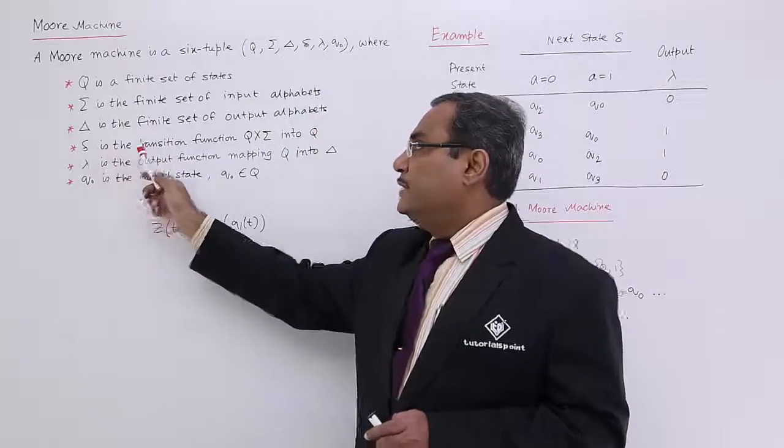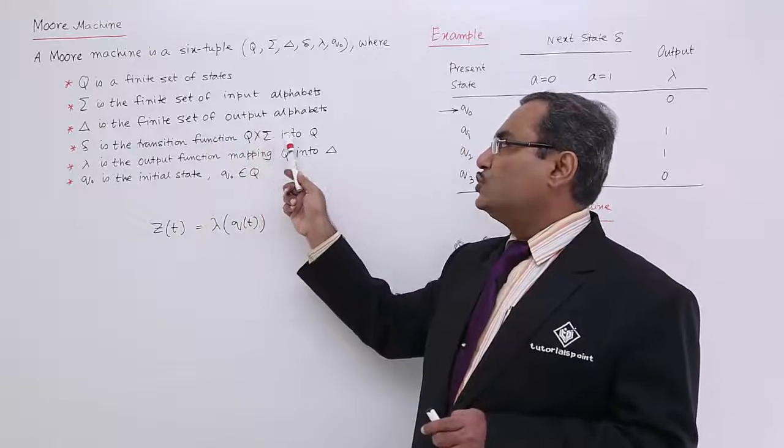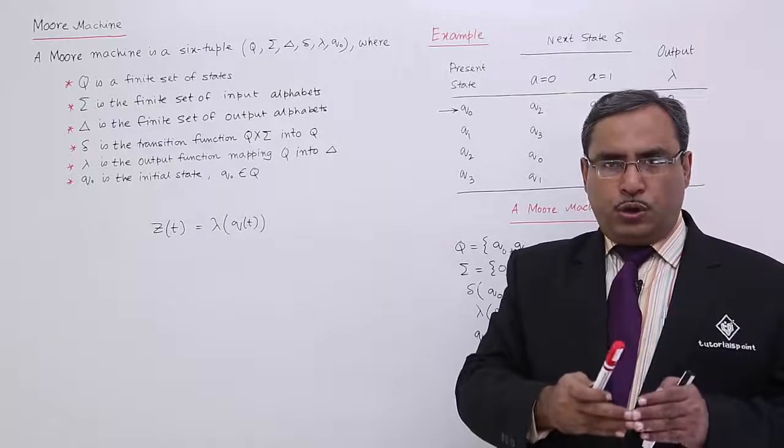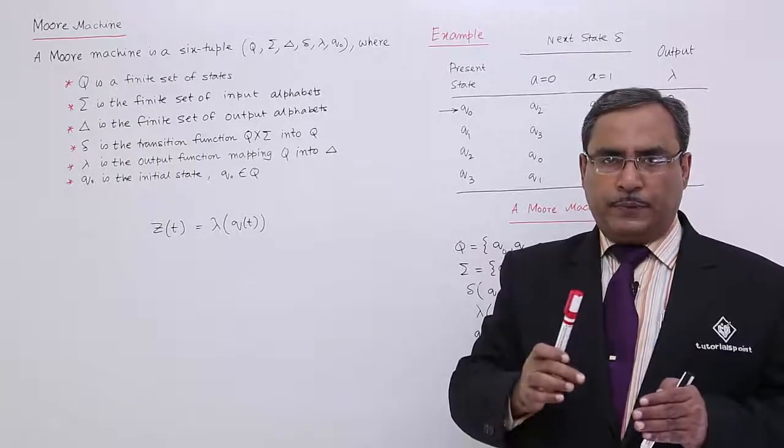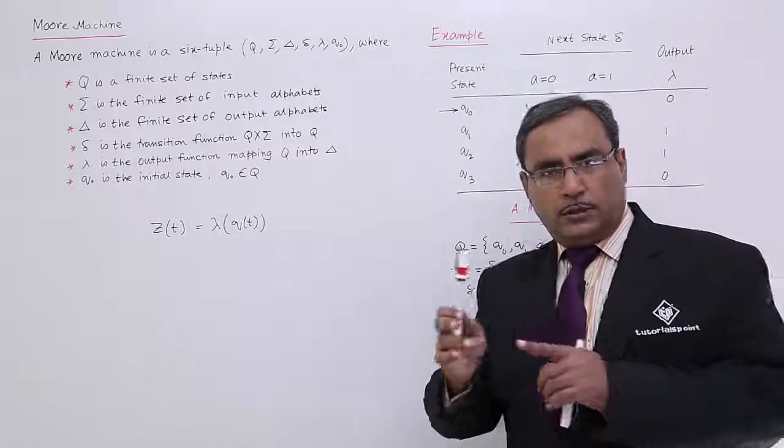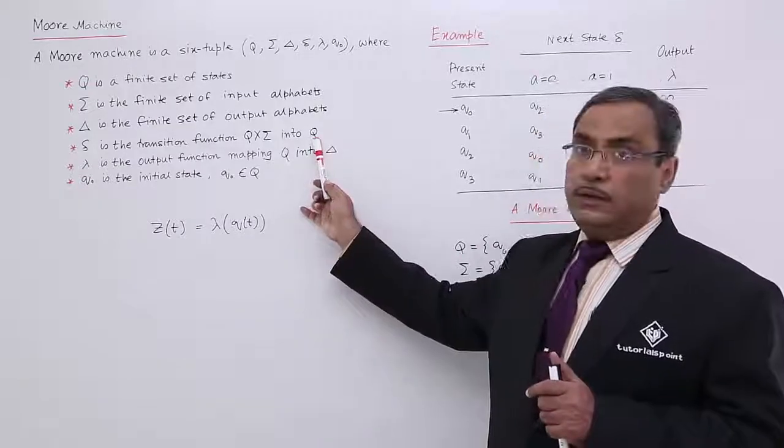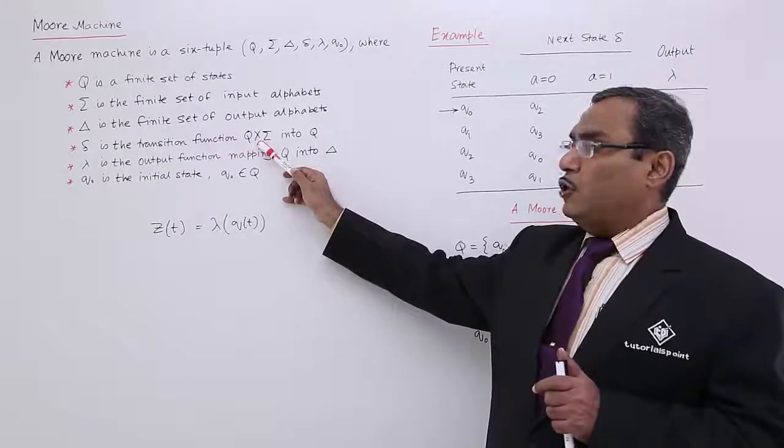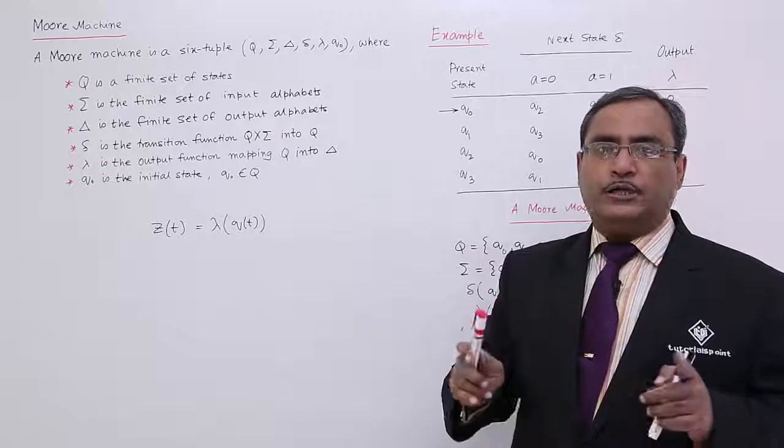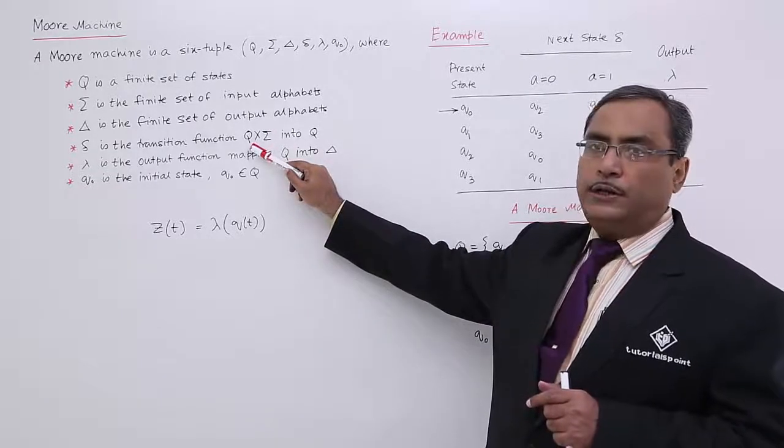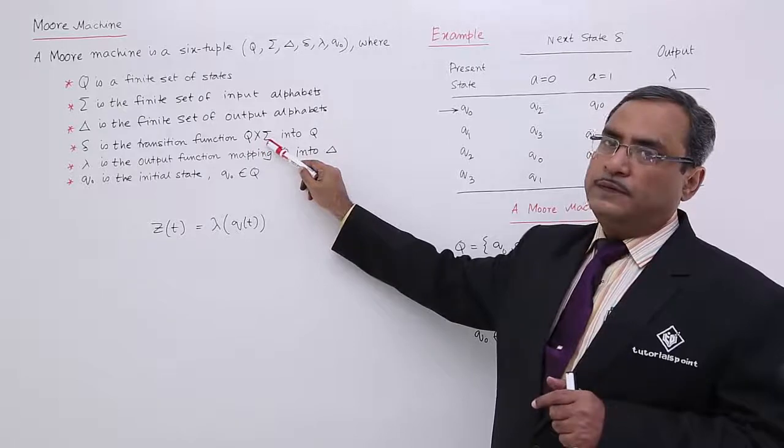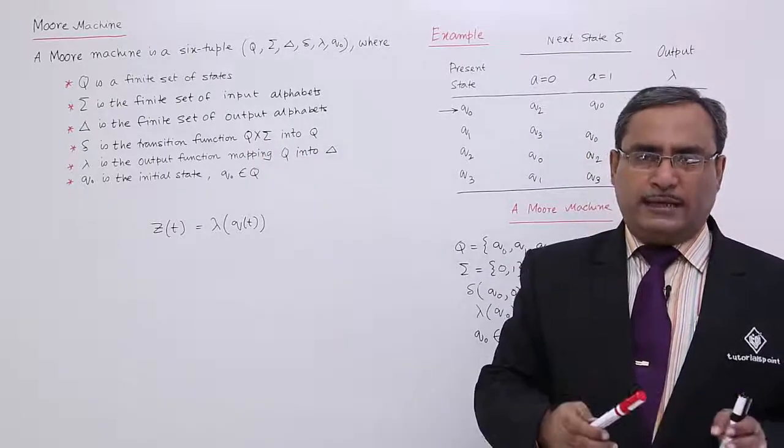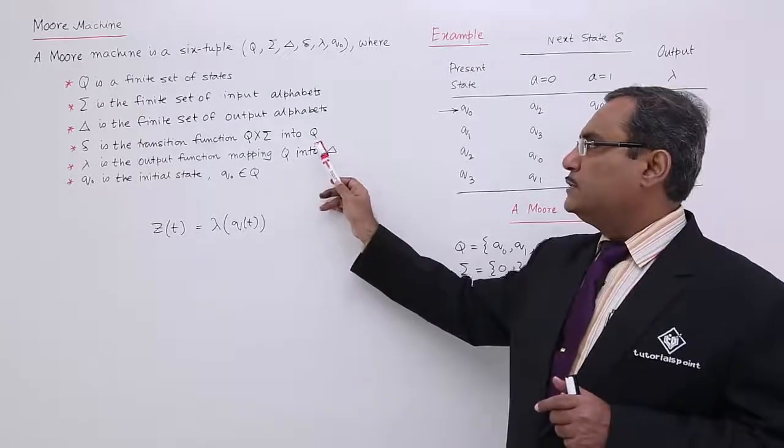Delta is the transition function which maps Q cross sigma into Q. That means one of the states from capital Q and one of the input symbols from sigma will guide me to one of the symbols from this particular set of states capital Q. This cross means actually we are doing all possible combinations, the Cartesian product between the set members of capital Q and set members of sigma. Here you are considering all possible combinations of Q elements and sigma elements and they will be mapped to one of the members of this Q.